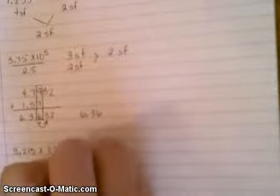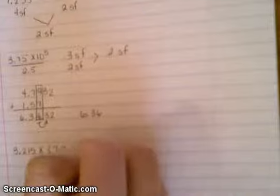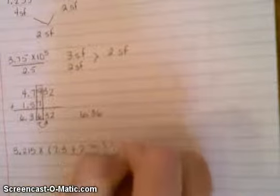Now what if I have a combination of a whole bunch of things? Let's say we have 3.215 times, in parentheses, 7.3 plus 2.75, divided by 2.319. Remember your rules of operation, you do parentheses first.